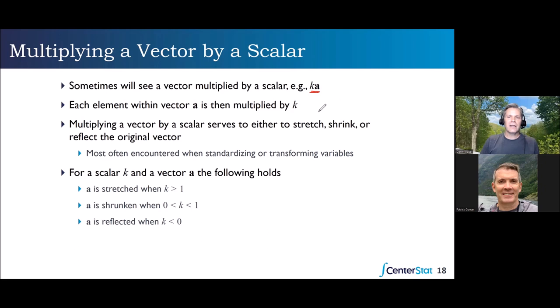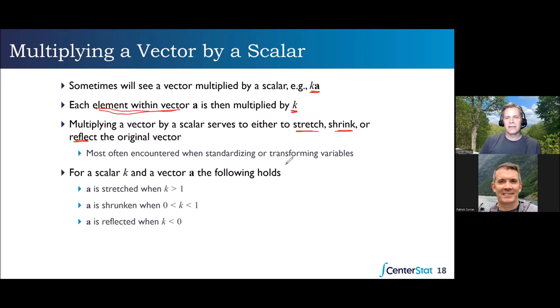Here we have vector a and scalar k — K times a. Scalar multiplication is easy and works the same way for a matrix as for a vector: we take every element within vector a and multiply it by scalar k. That's going to stretch, shrink, or potentially reflect the original vector depending on what that scalar is. If the scalar is greater than one, it will make all the elements bigger — stretching the vector out geometrically.